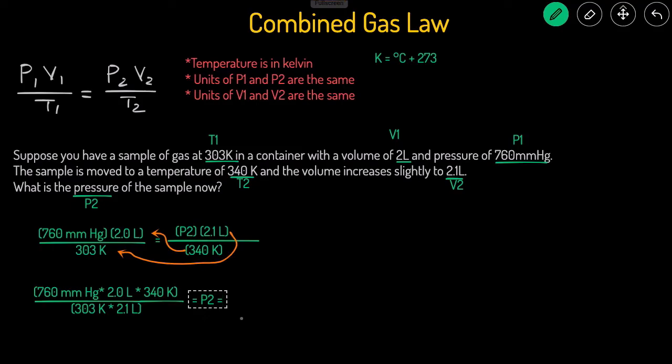When you do that, it comes out to 812 millimeters of mercury. It's millimeters of mercury because the liters cancel out and the degrees Kelvin cancel out, so you're left with just millimeters of mercury.